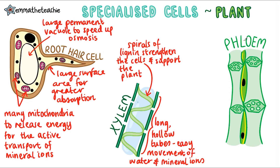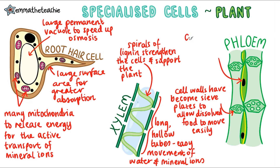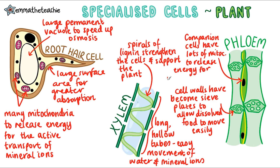Our sixth and final specialised cell is the phloem cell. What can you spot that would help it move dissolved food up and down the plant? Well, first of all, you can see that the cell wall has been replaced by these funny little things called sieve plates. And just like a sieve, they've got holes in them to allow dissolved food to move easily up and down through them. We've got another type of cell here which is called a companion cell and it's adjacent to the phloem cells. These have lots of mitochondria and they release the energy that allows the dissolved food to be moved up and down through the plant.